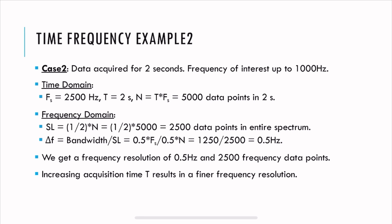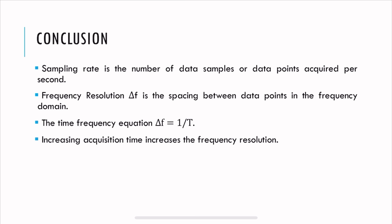To conclude: sampling rate or time resolution is the number of data points acquired per second. Frequency resolution is the spacing between data points in the frequency domain. The time-frequency equation is delta F = 1/T. And if you want to increase the frequency resolution, the only way is to acquire more data — longer acquisition time. Thank you very much for watching. Have a great day ahead.